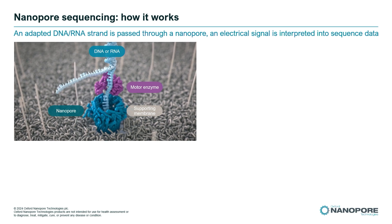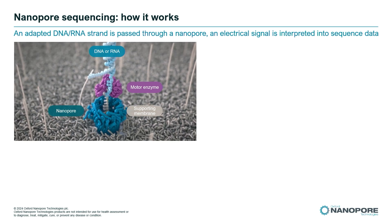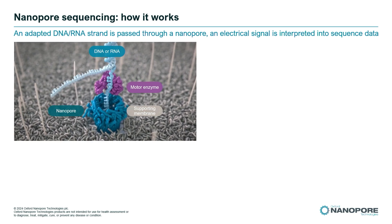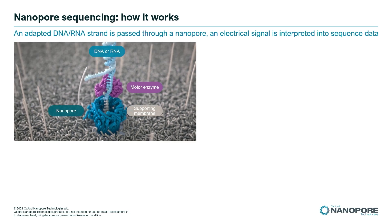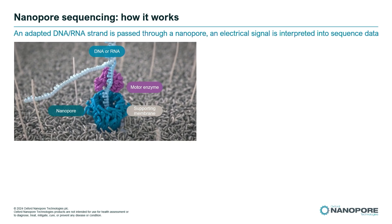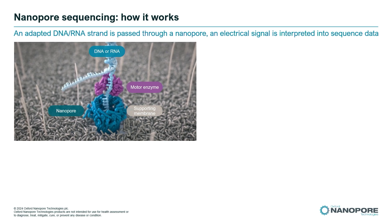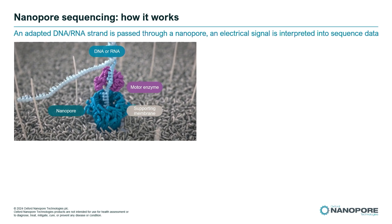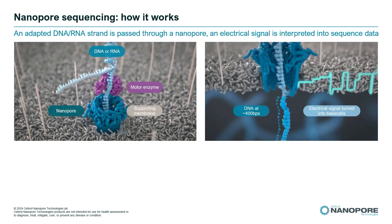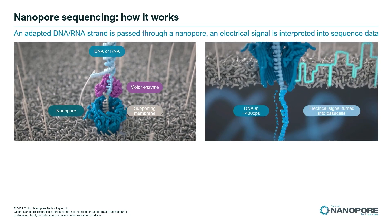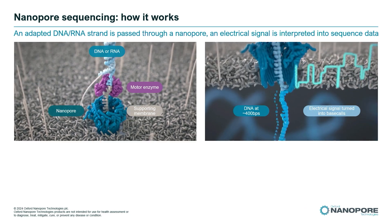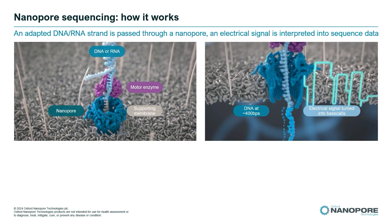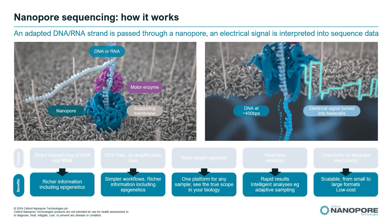Nanopore sequencing is unique in that we utilize a protein nanopore — this is the heart of our platform. It's a protein nanopore sat in a supporting membrane, and we bring the DNA or RNA to that pore, load it through a motor enzyme, and thread it through the hole in the middle of the pore. We pass current through the pore, and that DNA or RNA blocks that current to different amounts, producing an electrical signal — a trace we call a squiggle. This squiggle we turn into base calls: ATGs, Cs, or modifications. We're able to read native or amplified DNA or RNA.